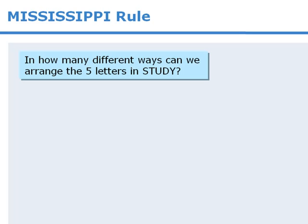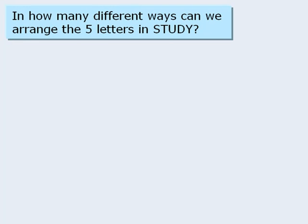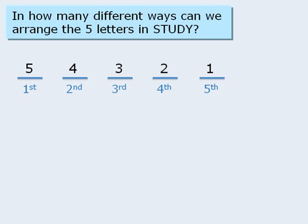In this question, we want to calculate the number of ways we can arrange the five letters in the word study. One way to solve this question is to take the task of arranging the letters and break it into stages. From here, we can determine the number of ways to accomplish each stage, and then apply the fundamental counting principle to get 120 different arrangements.